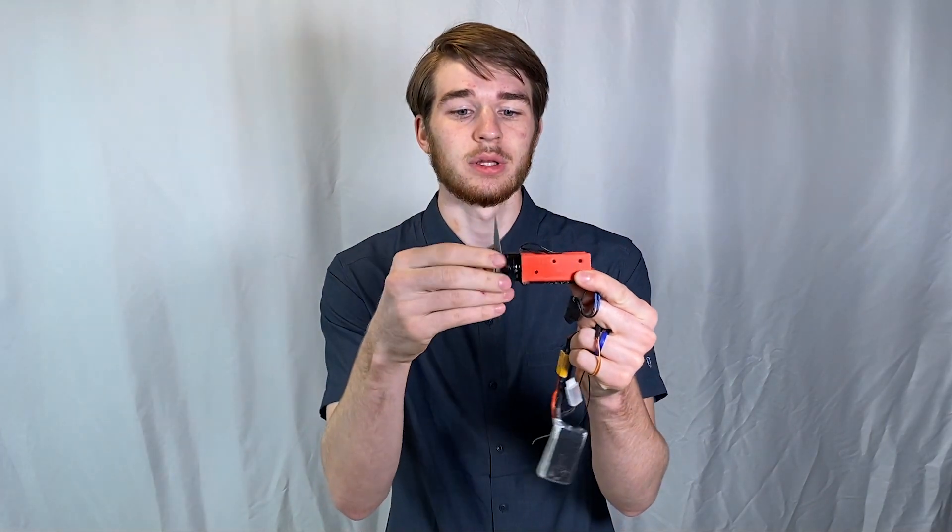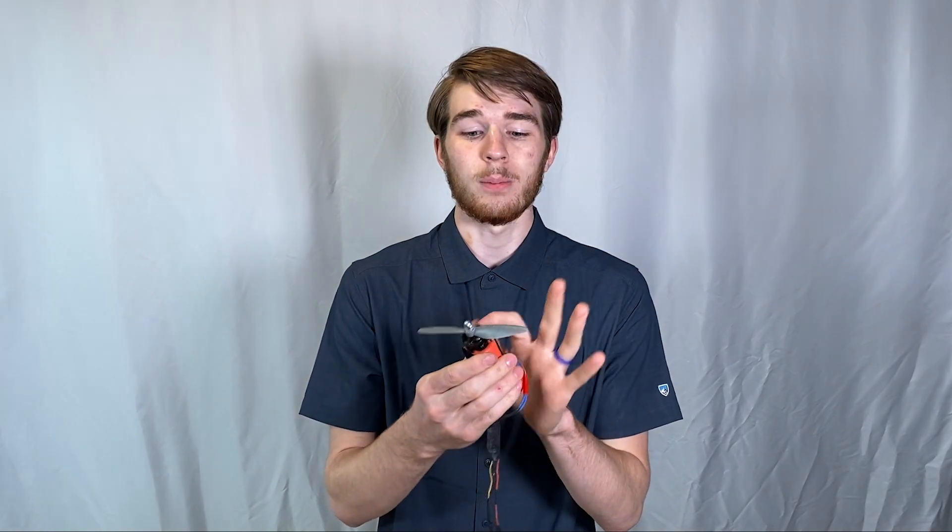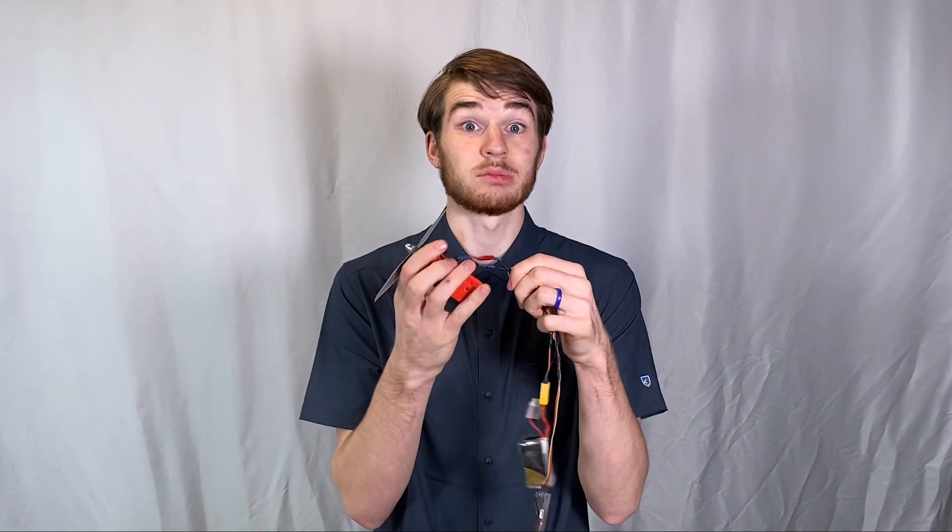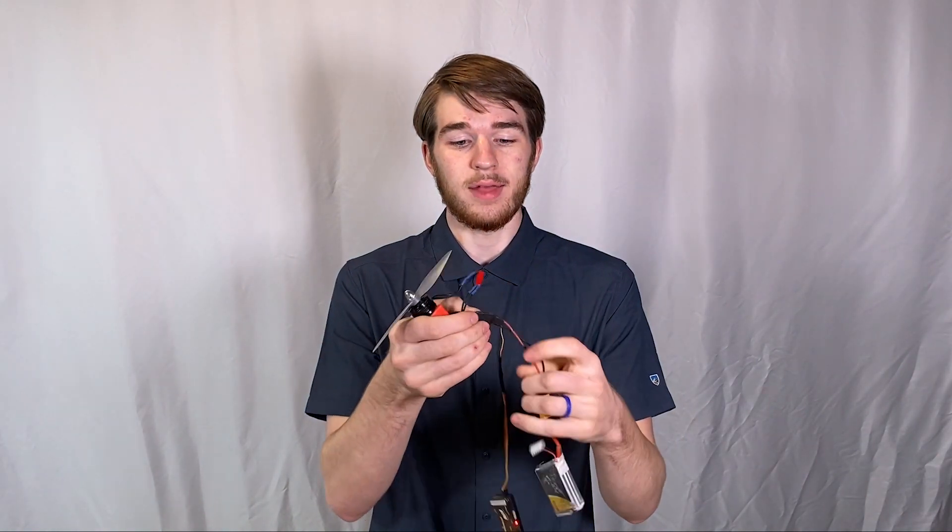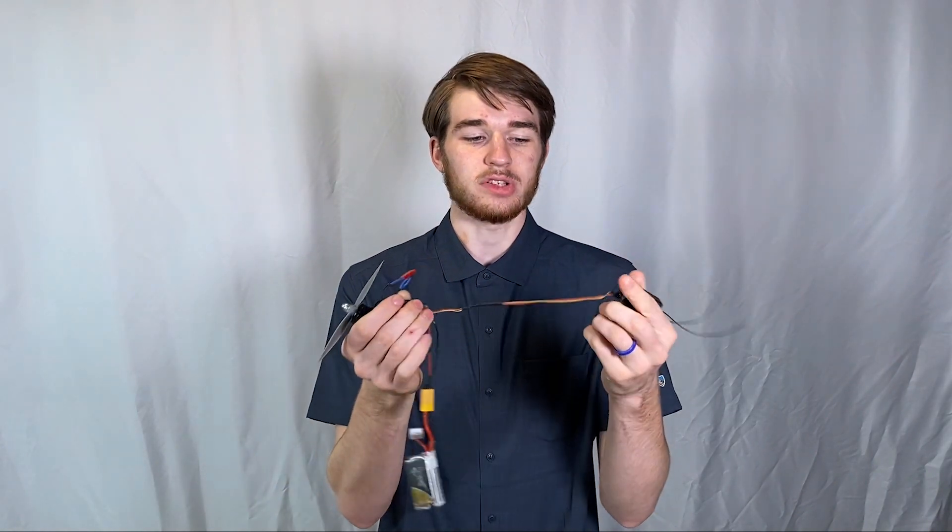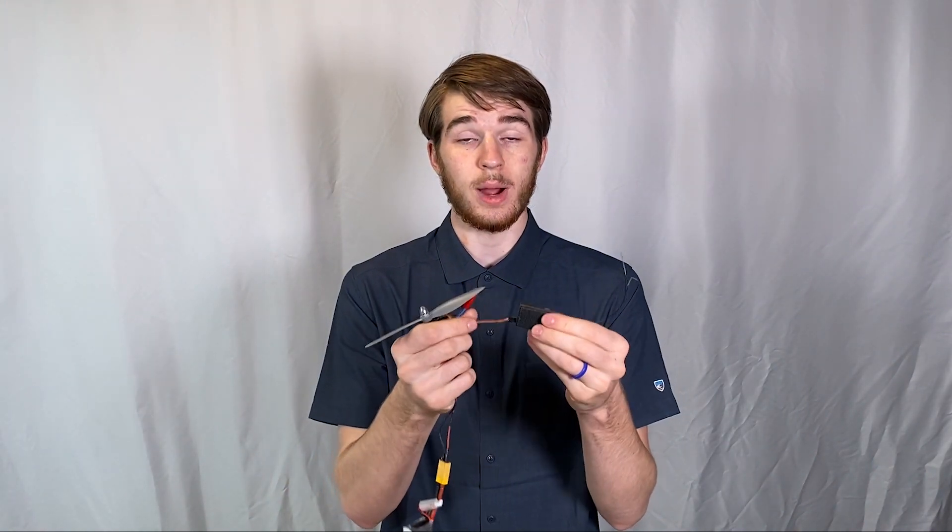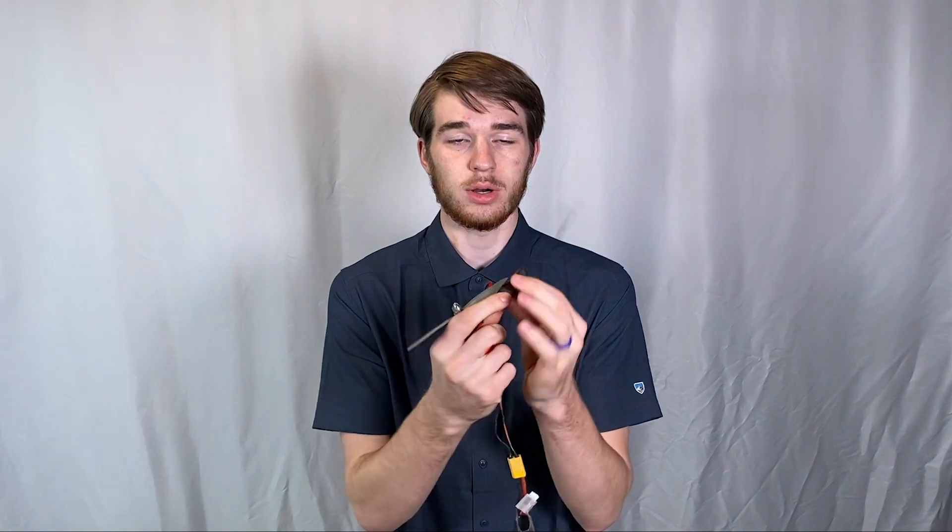Basically we've got our motor, three wires because it's a brushless motor, going to our electronic speed controller or ESC for short. Then that's plugged into our battery for power. And also coming off of that is our receiver controller wire. So this wire is connected to our receiver.